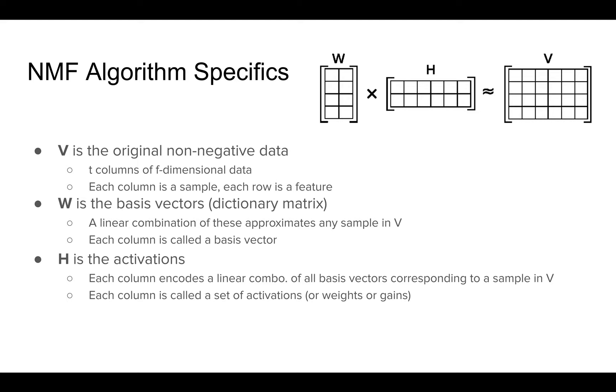And what this is, is a set of things where a linear combination of any of these things approximates any sample in V. So they're kind of like building blocks, you could say, where each column is one of these things, and they're called the basis vectors, where H is kind of the complement to W.